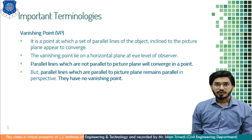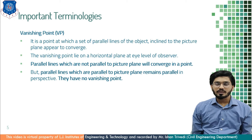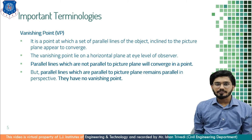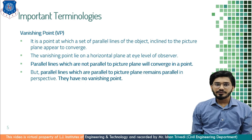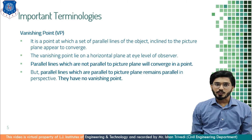Sometimes we have the illusion that the sky and earth are going to merge at a point — that we call the horizon, which is nothing but the horizontal line. If I am standing at a higher altitude, I have a vision of a longer distance, but the illusion remains the same. Furthermore, parallel lines that are not parallel to the picture plane converge at a vanishing point, but parallel lines that are parallel to the picture plane remain parallel in the perspective as well and have no vanishing point.